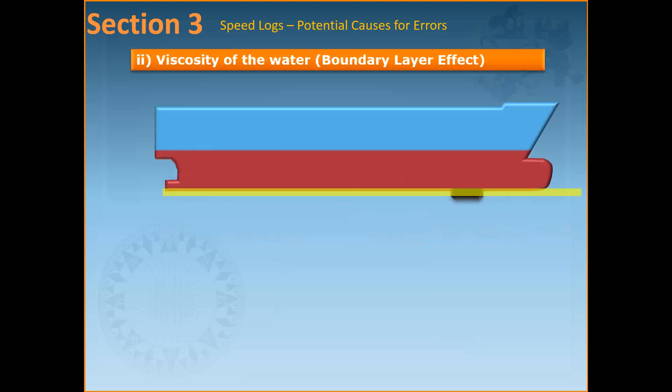The second one refers to the viscosity of the water which results in water being carried along with the hull by friction which is called the boundary layer effect. This boundary layer may be a few centimeters at the bow of a ship but more than a meter at the stern. Some of the logs may have to extend beyond the boundary layer to ensure that the sensor is in clear water. They then may have to be retractable to avoid damage.